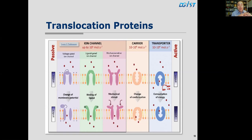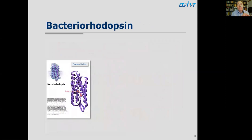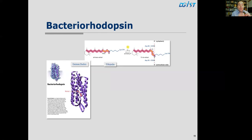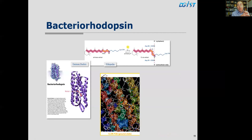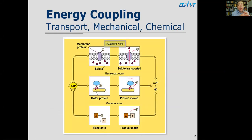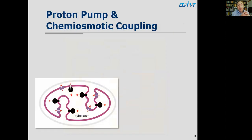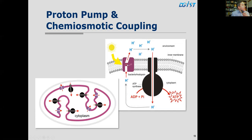The membrane is a very dynamic system that can set up and change a voltage across it. We talked about bacteriorhodopsin, a protein in bacteria that pumps protons by virtue of a shift in a retinal cofactor molecule inside it — going from a trans to a cis configuration. That movement translocates a proton toward the outside, allowing a proton to be accepted from the inside.